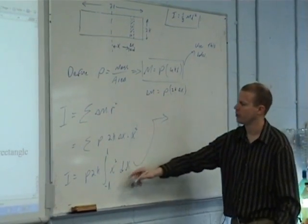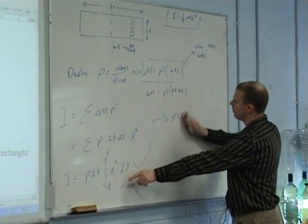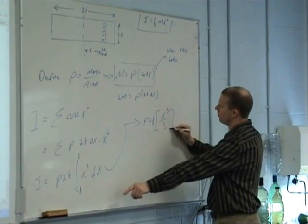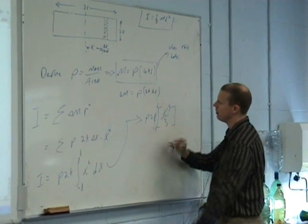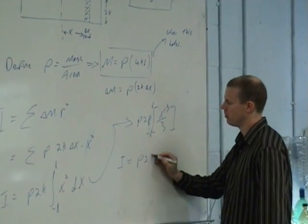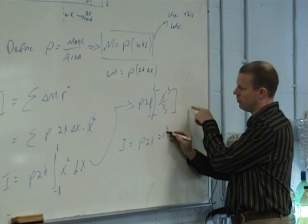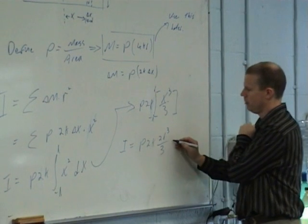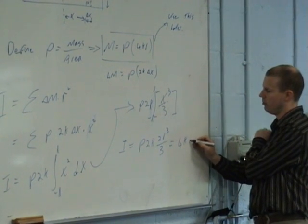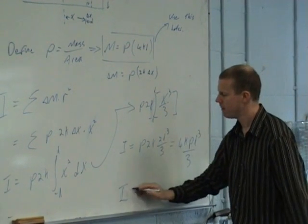Alright, so we just finish it off nice and quickly. So minus L to L, when I do integrate I get rho 2K, integrate this, X cubed over 3 from L to minus L. That goes to 2K rho L cubed over 3. And if I put my limits in there, 2L cubed over 3, which is equal to 4K rho L cubed over 3.